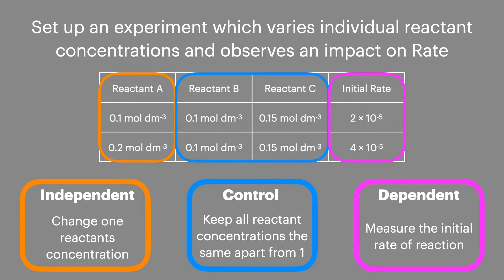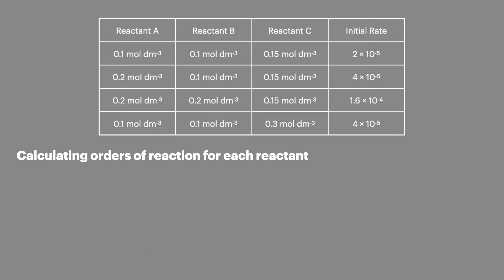In this example we can see the concentration of A has doubled and the initial rate has doubled also, which means that this order of reaction is first order. In an exam we are usually faced with a larger data set which has been provided for us. There are four simple steps to follow to identify the orders of reaction for each reactant and therefore build the rate equation.